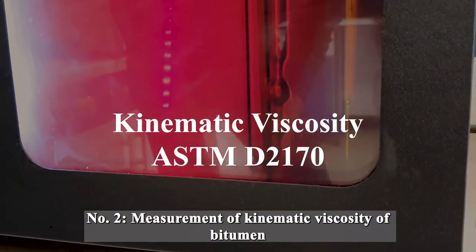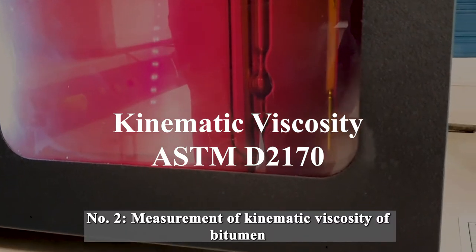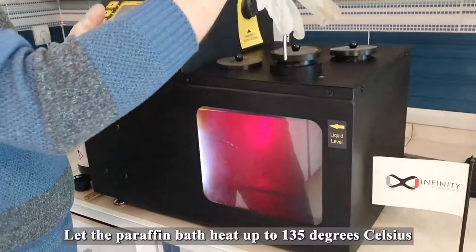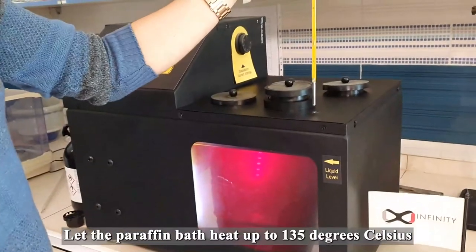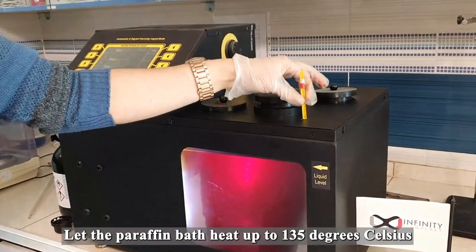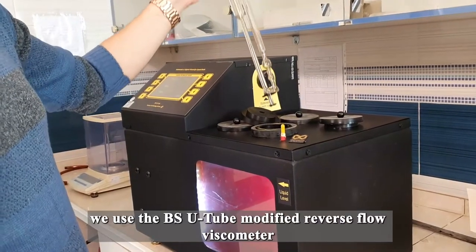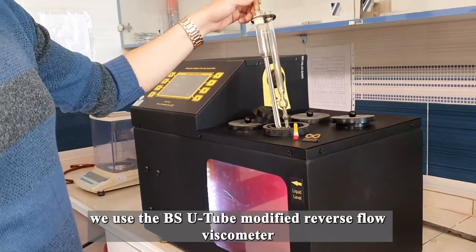Number 2: Measurement of Kinematic Viscosity of Bitumen by a Capillary Viscometer. Let the paraffin bath heat up to 135 degrees Celsius and maintain the temperature. In this test, we use the BSU tube modified reverse flow viscometer.